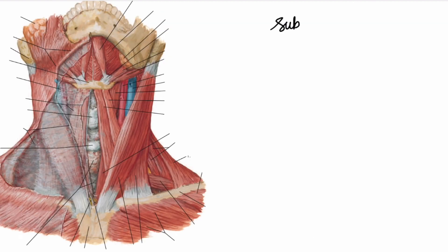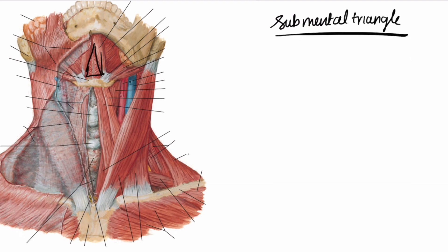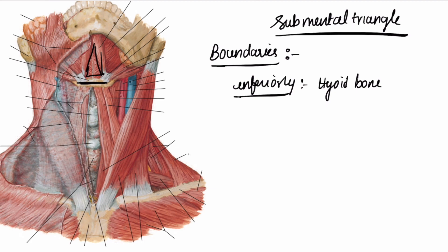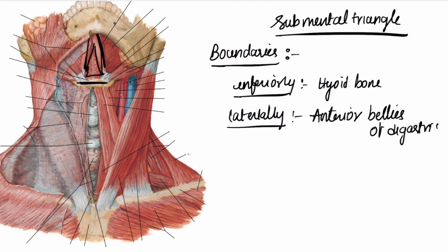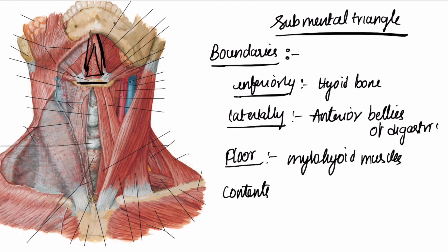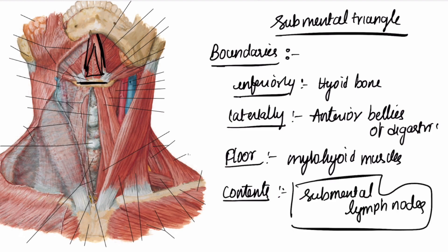Now let us look at the submental triangle. Its boundaries are: inferiorly, the hyoid bone; laterally, the anterior bellies of the digastric muscle; and the floor is the mylohyoid muscle. The contents of the submental triangle are the submental lymph nodes.